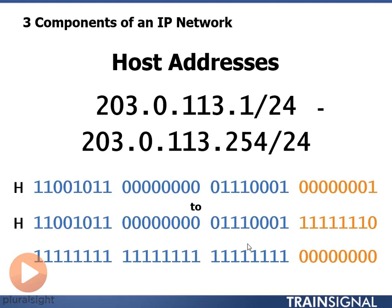The last address of my host range is going to be one fewer than the broadcast address. My broadcast address is all ones. If I subtract one from my broadcast address, what I'm left with is an IP address in the host portion that has all ones except it ends in a zero.